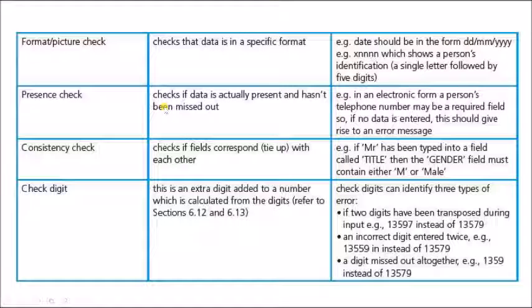The presence check is checking if data actually present and hasn't been missed out. If I want to enter some data in a new form, I should fill some fields. The fields with the red star means it is a must fill in field. If I forgot to enter this field, the presence check will make some error message that there are some important fields that are not filled. They are empty. Like an example, electronic phone person's telephone number may be required field. If no data entered in this telephone number, this should give rise an error message.